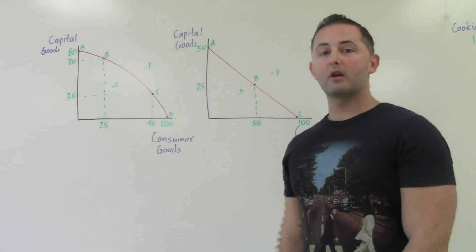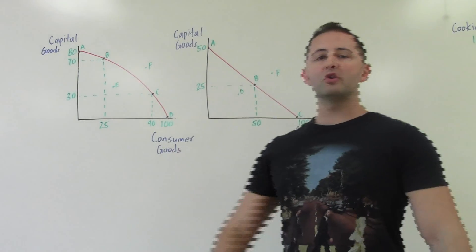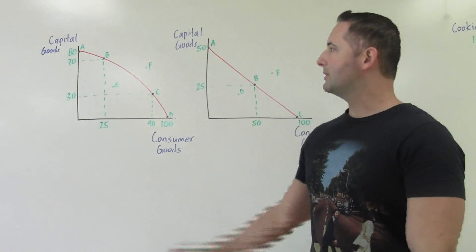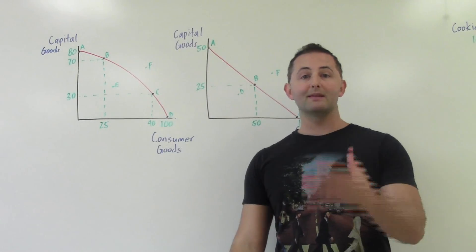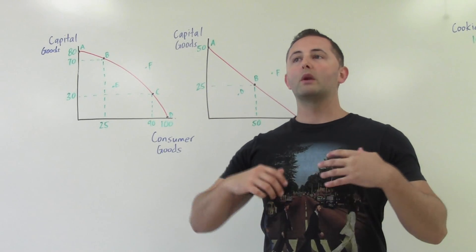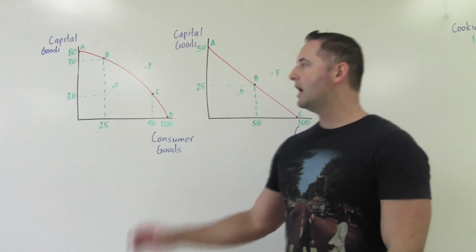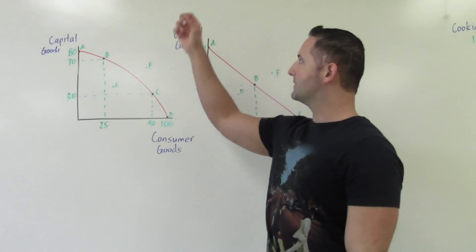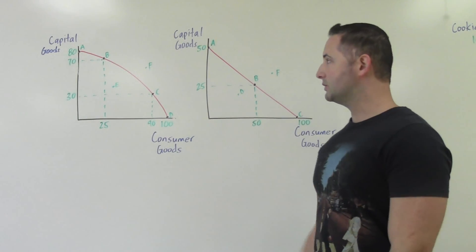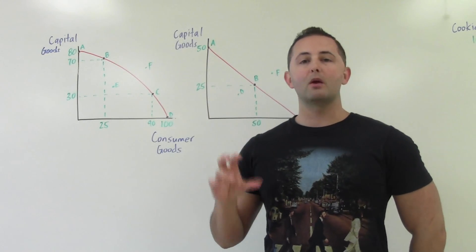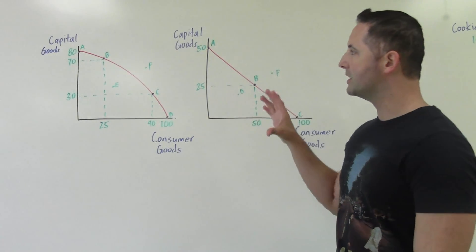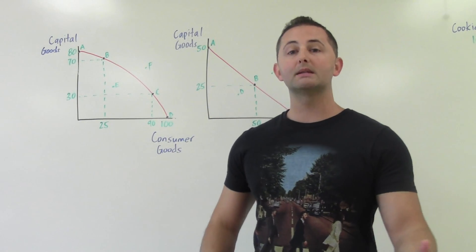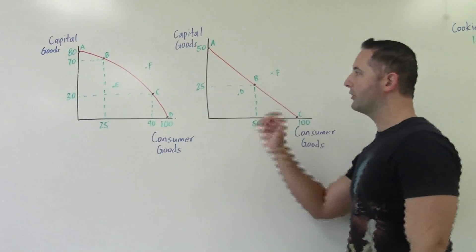Welcome to macroeconomics — introduction to economic concepts. One of the very first things we're going to cover is the production possibilities curve. We have two different ones here, and like the name suggests, these show what is possible to be produced in an economy. We simplify it down and assume only two things can be made. Our y-axis represents capital goods and our x-axis represents consumer goods. The curve in red represents the maximum amount of stuff that can be produced.